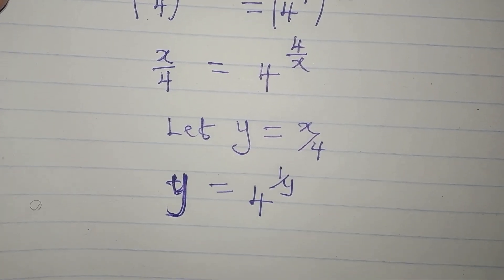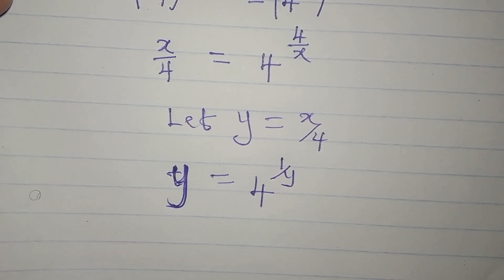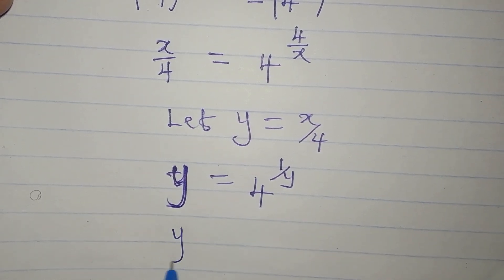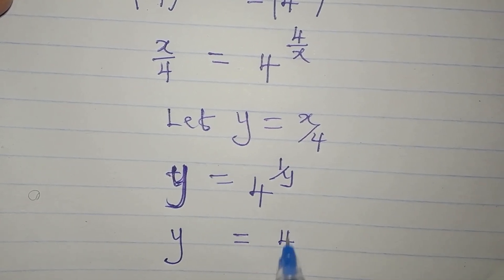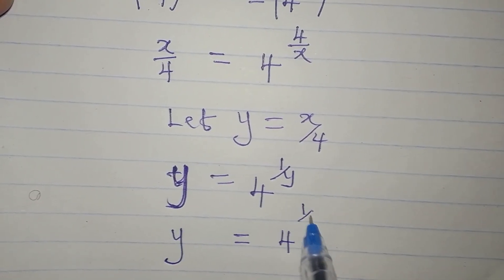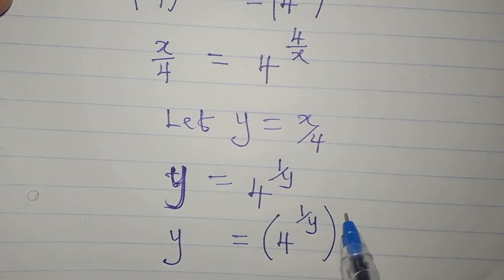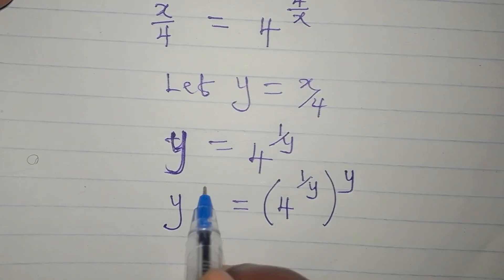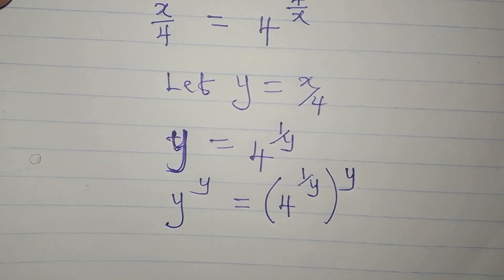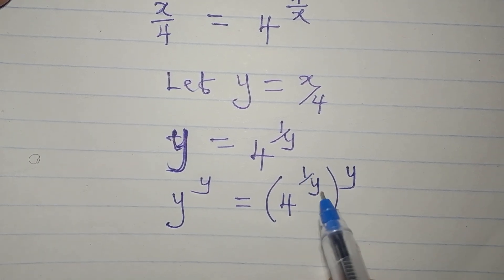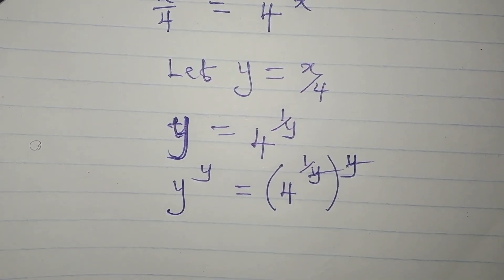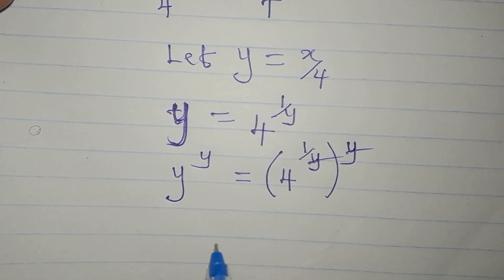Our target is to remove the power of 1 over y from the right side. We have y equal to 4 to the power of 1 over y. To remove that power, we raise both sides to the power of y. On the left this gives y to the power of y, and on the right the y over y in the exponent cancels to give just 4.